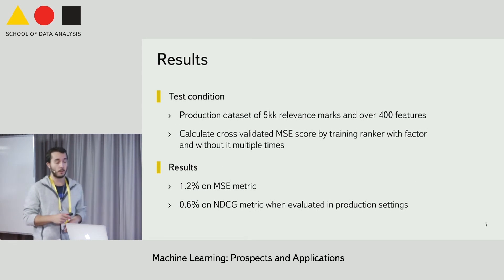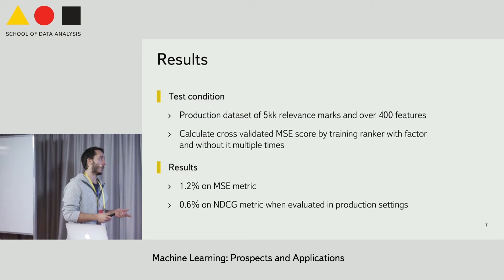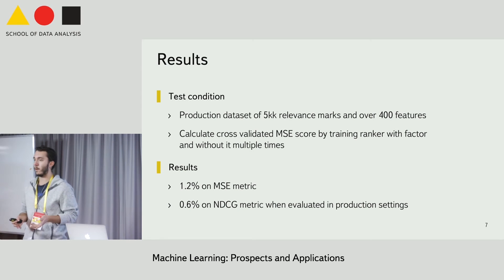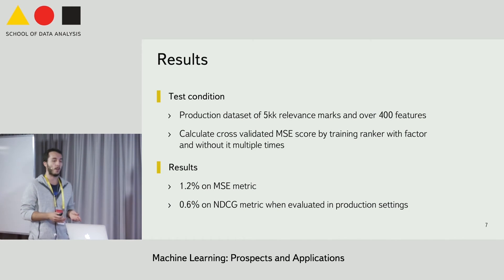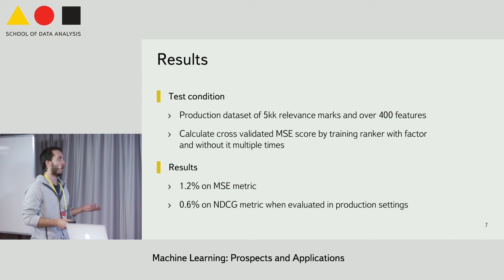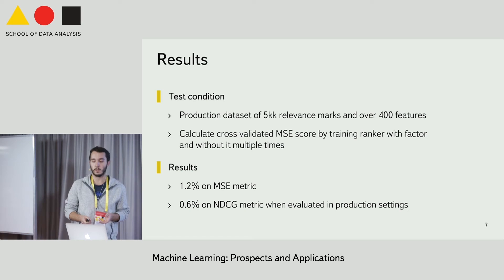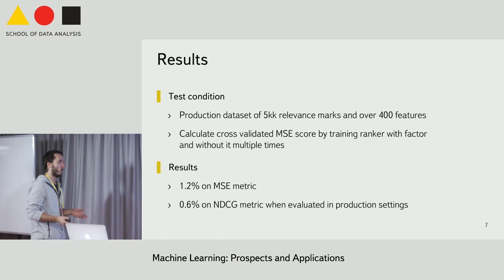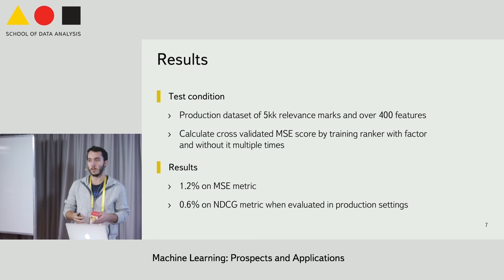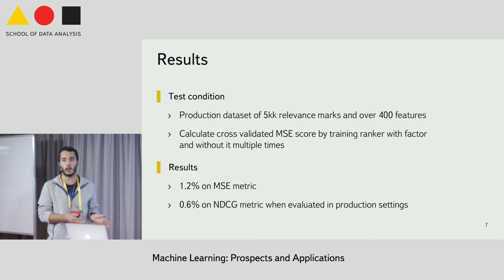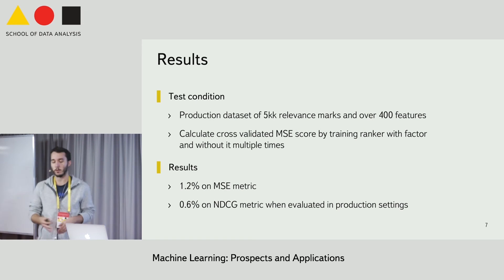For the results of the distance feature, we considered a production dataset which we use for training our ranker, consisting of query-image-neural pairs and relevance marks. It contains around 5 million relevance marks and over 400 features. To test our distance feature, we added it to this dataset and split it 200 times into train and test parts in an 80/20 proportion.